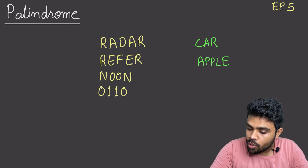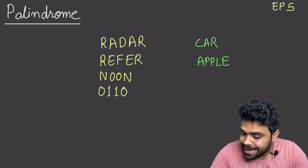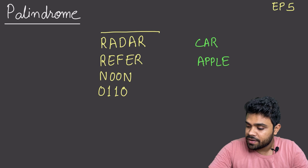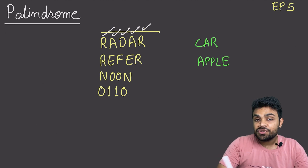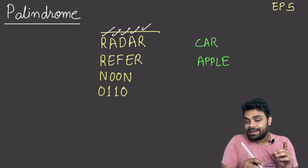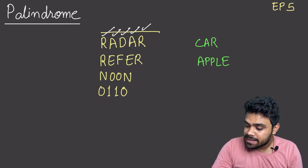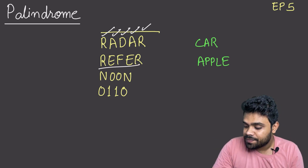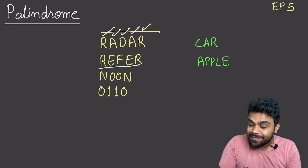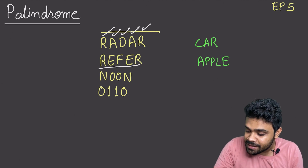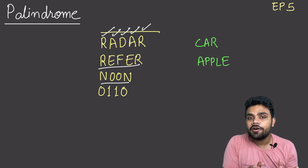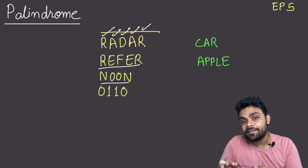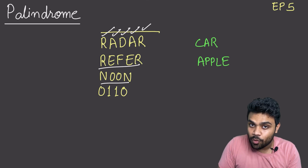Take a pen and paper and write the reverse of radar. The reverse of radar is R, A, D, A, R — same from left and right. Radar is radar. Same for 'refer' — the reversal of refer is refer. If we take the reversal of 'noon', it will again be noon. So a word which is equal to its reverse is called a palindrome.